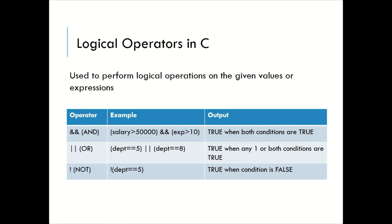Logical AND checks both the conditions. If both the conditions are true, it returns true; otherwise false. Here the expressions given are salary greater than 50,000 and experience greater than 10. If both these expressions are true — for example, if the salary is 60,000 and experience is 15 — then as both are true, it returns true. If any one condition is false or if both the conditions are false, it is going to return false.